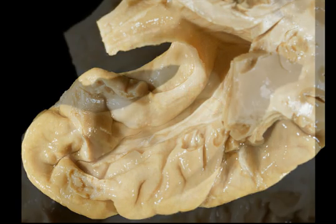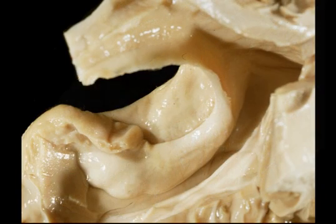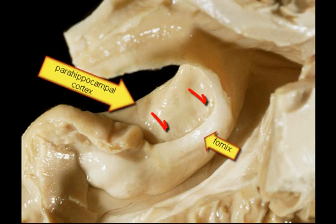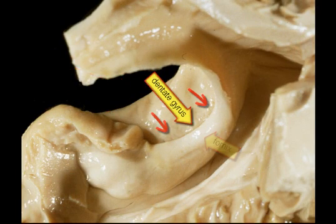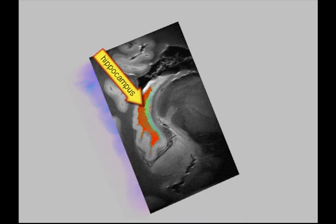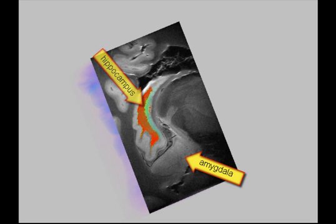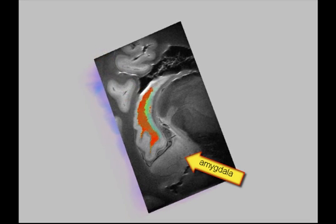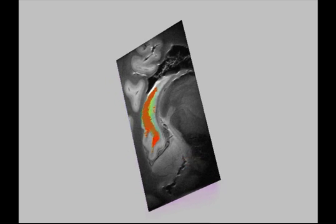In between the parahippocampal cortex and the fornix lies the dentate gyrus. We downloaded a 9 tesla MRI of a human hippocampus, taken post-mortem and downloaded from the website of Penn State University, and rendered here in VP Microlab.